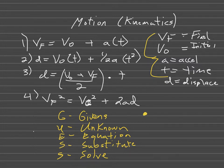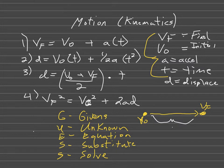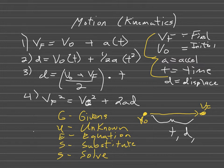Think of it like a car that has an initial velocity, travels to a point where it has a final velocity, over a time period in seconds. It also has a displacement over that time period. If it changes speeds and doesn't move at constant velocity, it has an acceleration over that time period too. We're just using these equations to solve for these variables.